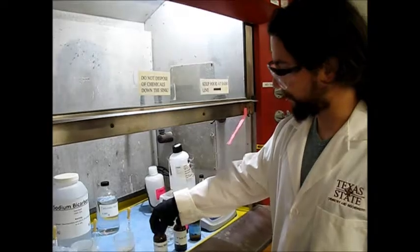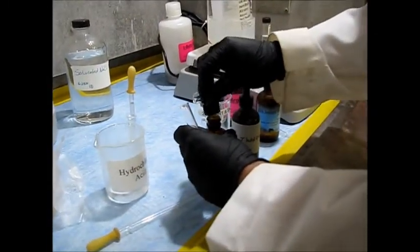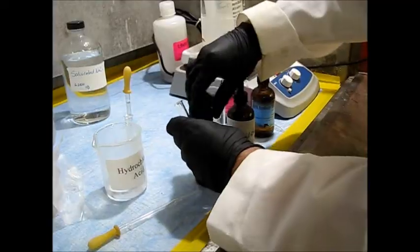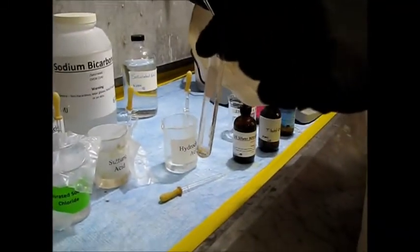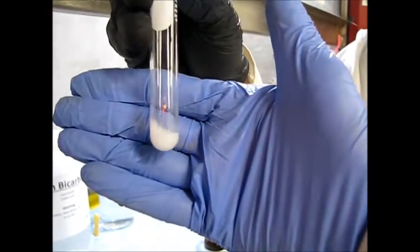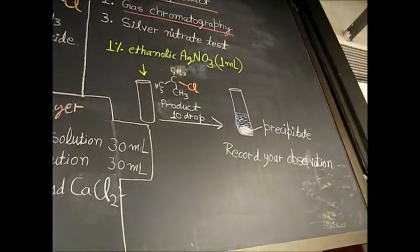Now we perform the silver nitrate test. Take one percent silver nitrate in ethanol and pipette about one milliliter into a test tube. Then add about 10 drops of the product, tert-butyl chloride. Immediately you can see a white precipitate forming — this confirms a successful reaction. We have obtained tert-butyl chloride confirmed by the formation of the white silver chloride precipitate.